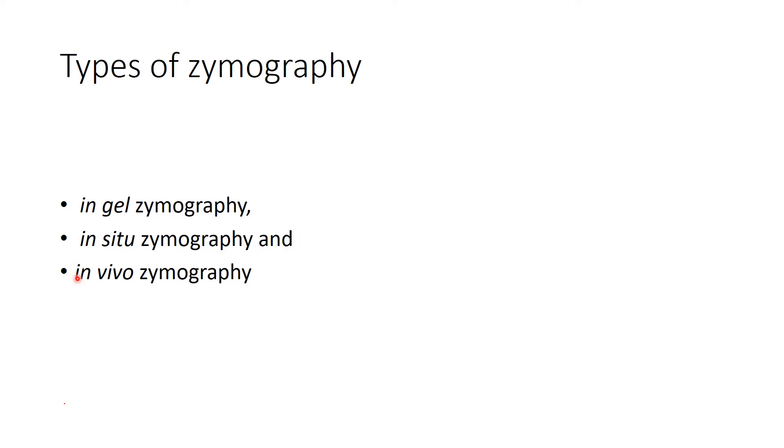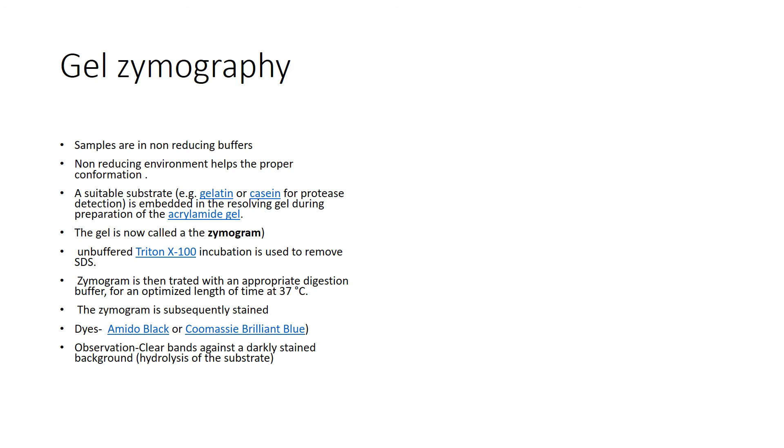The types of zymography are in-gel zymography, in-situ zymography, and in-vivo zymography. Let's now start with gel zymography or in-gel zymography. In-gel zymography is basically dependent upon the normal polyacrylamide gel electrophoresis technique, with certain modifications.